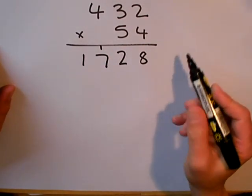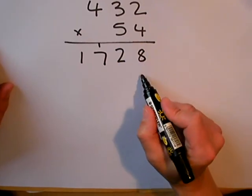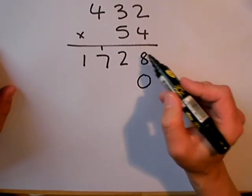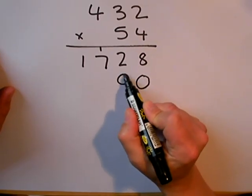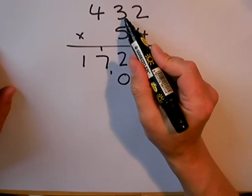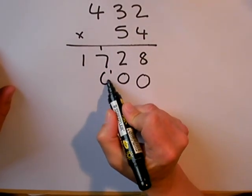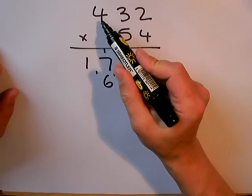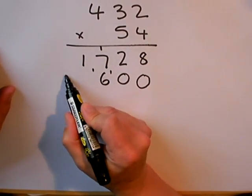Before I start multiplying by the 5, I must remember to put the 0 down. 5 twos are 10, 1 to carry. 5 threes are 15, plus the 1 is 16. And 5 fours are 20, plus the 1 is 21.